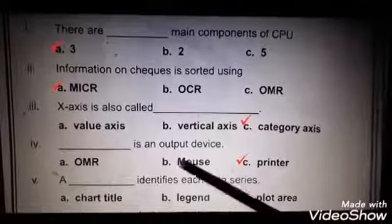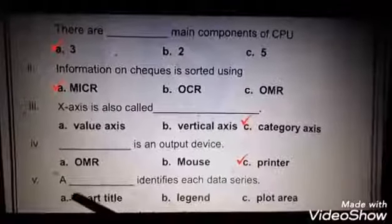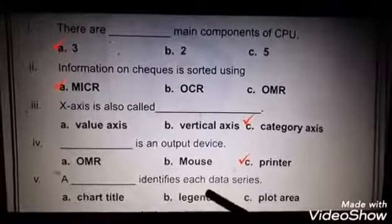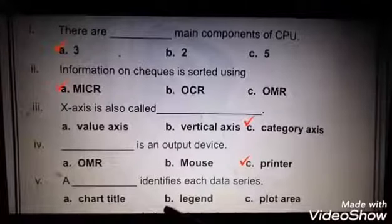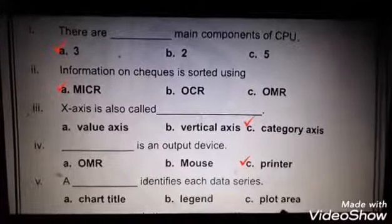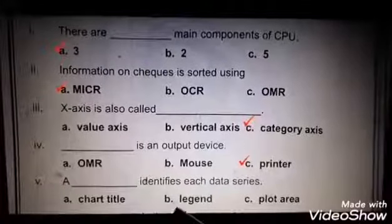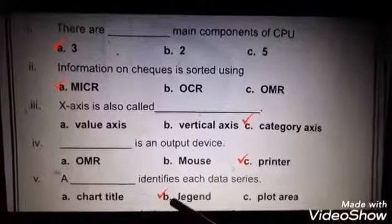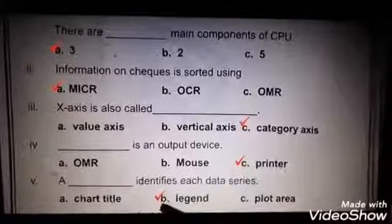Number 5: A dash identifies each data series. A: chart title, B: legend, C: plot area. Right answer is B, legend. Yeh ek special feature hota hai jisse data series jo hai different colors mein show hota hai.